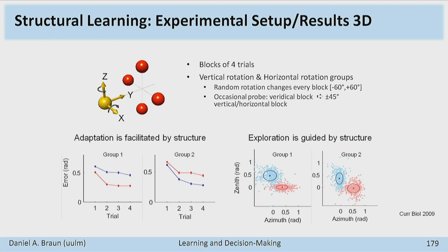In a 3D follow-up experiment, one group learned rotations around the horizontal axis and another around the vertical axis. When exposed to 45-degree rotations, each group adapted faster to the axis they had trained on. Looking at endpoint spread, the horizontal group explored more in the horizontal direction and the vertical group in the vertical direction — reflecting active exploration biased by the learned structural invariant from training, not just aftereffects.